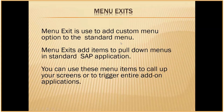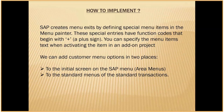Moving to the next point — menu exits. Menu exits are used to add custom menu options to the standard menu. These are items in the pull-down menu in a standard SAP application, and you can use these menu items to call up your screen or trigger an add-on application. SAP creates menu exits by defining special menu items in the Menu Painter. These special menu items have a function that begins with a plus sign. You can add customer menu options in two places: the SAP initial screen menu, and the standard menu of a standard transaction.